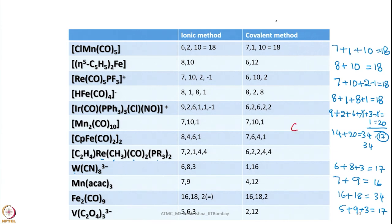For the oxalate complex: oxalate as a ligand contributes electrons from both donor atoms — considering 2 plus 2 equals 4, plus 4, it becomes an 8-electron species. You must remember to count all donor sites on bidentate ligands like oxalate when doing electron counting.